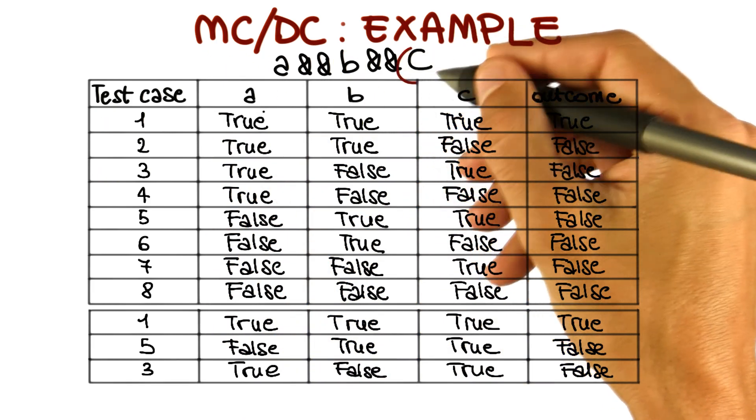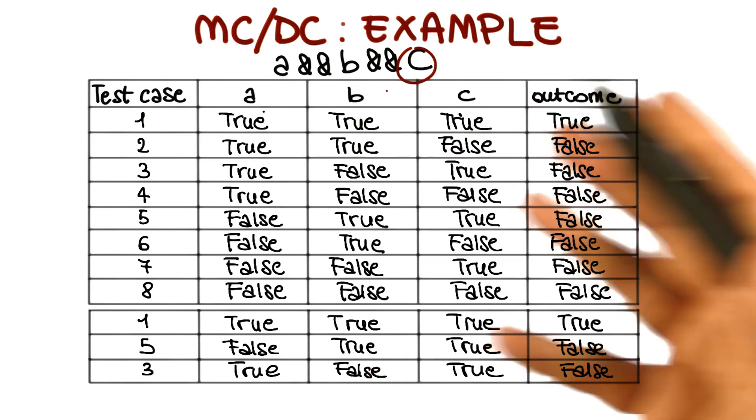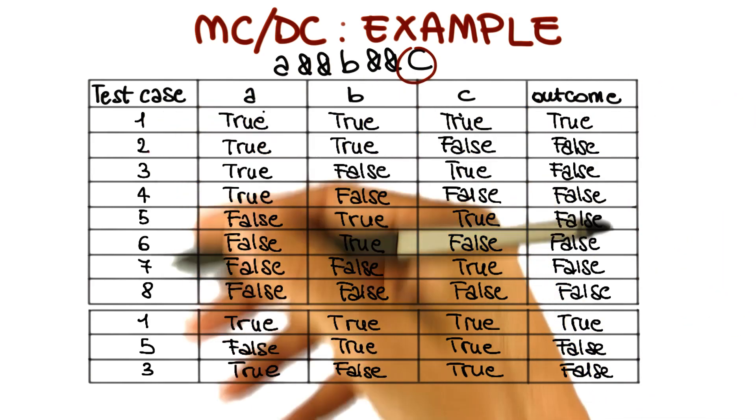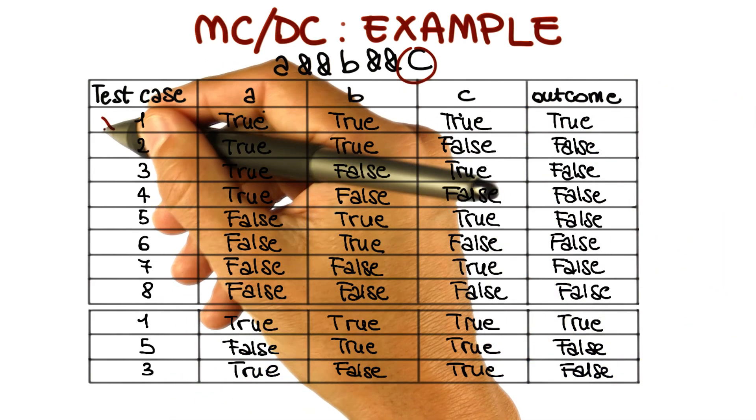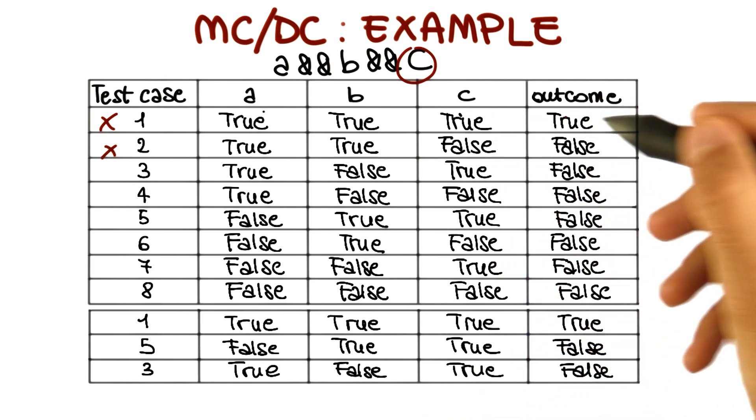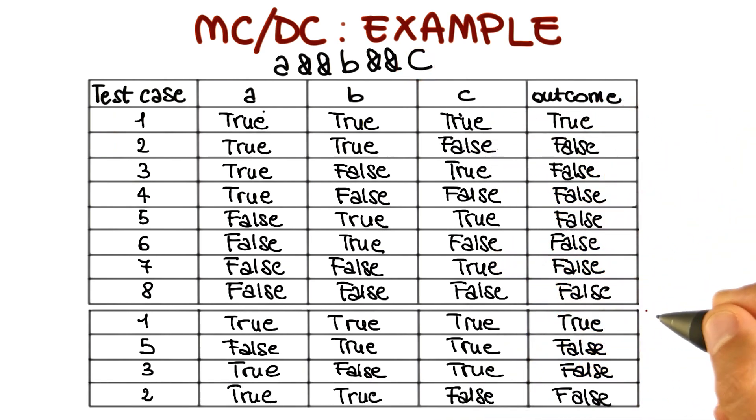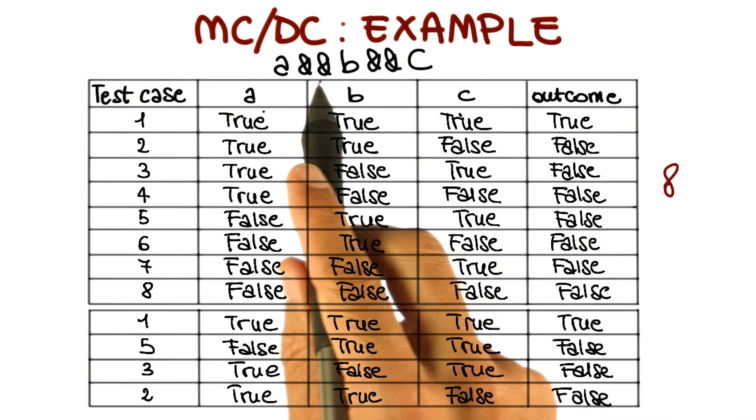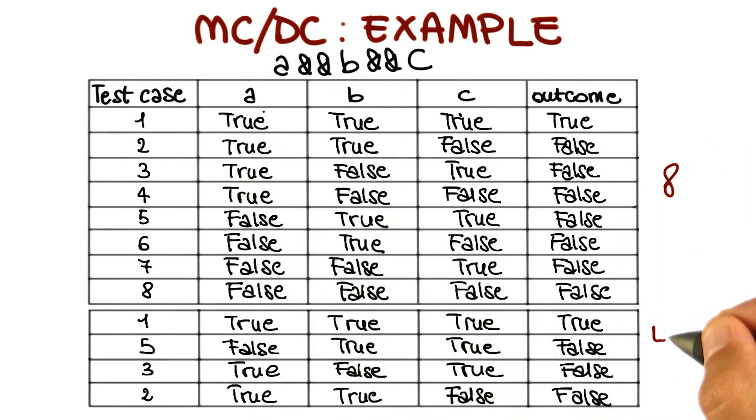Now let's look at our last condition C. At this point we know the game, so we just have to look for two test cases that satisfy our requirements, and in this case one and two are suitable candidates. And once more, because we already have one, we just have to add two to our list. So as you can see from this example, we went from having eight test cases needed to cover all possible combinations of conditions to only four test cases to satisfy the MC/DC criterion.